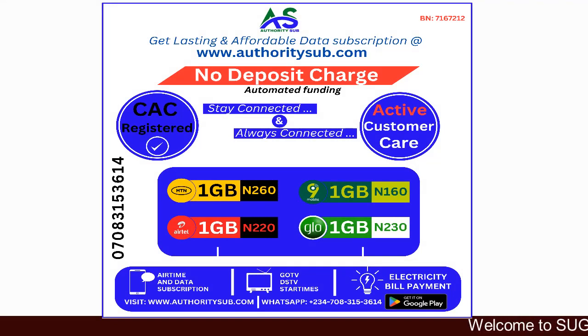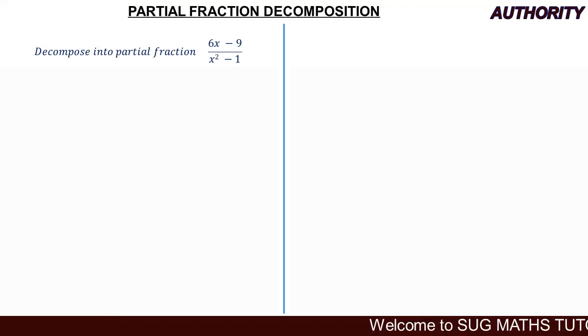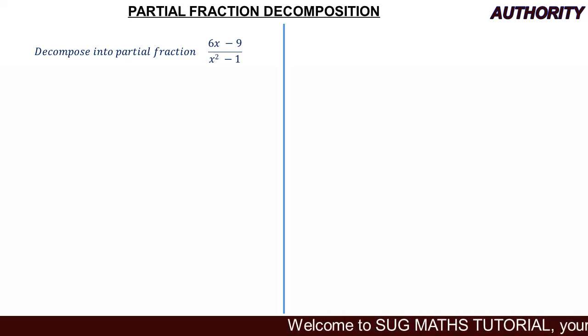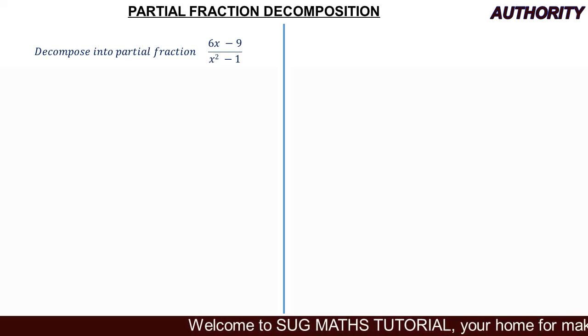Alright, welcome again. Let's take a look at this question: decompose into partial fractions (6x - 9) all over x² - 1. Please pay attention — this is very simple.